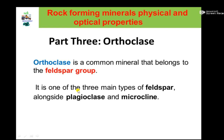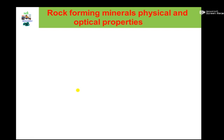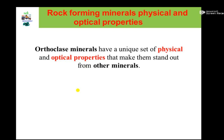Orthoclase is a common rock forming mineral, mostly found in igneous rocks. Orthoclase minerals have a unique set of physical and optical properties that make them different from others, with a unique physical and optical property different from other rock forming minerals.